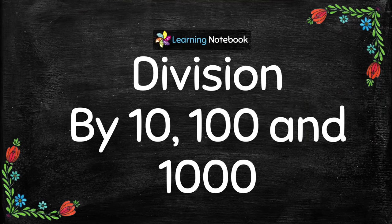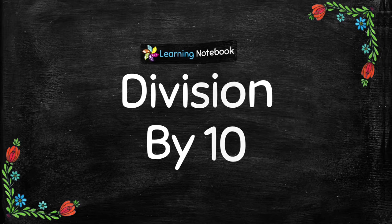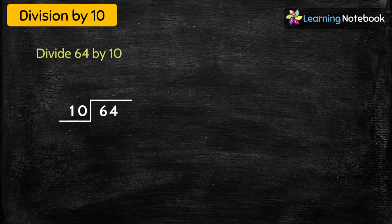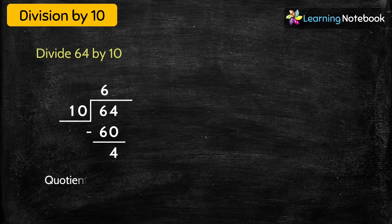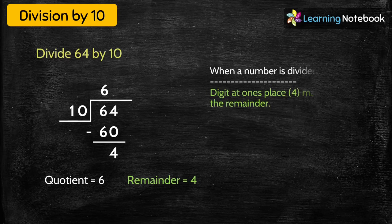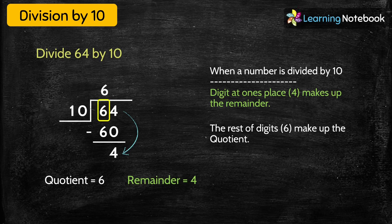Now we will do division by 10, 100, and 1000. First, divide 64 by 10 using long division. 10 × 6 = 60, and 64 − 60 = 4. So quotient = 6, remainder = 4. We observe: when a number is divided by 10, the digit at the ones place becomes the remainder, and the rest of the digits make up the quotient.